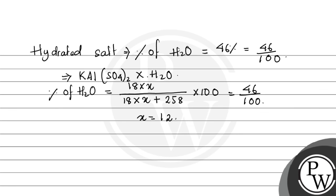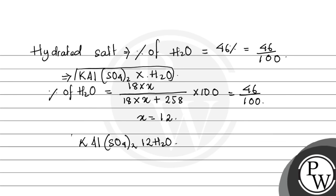We put X = 12 into the formula, giving us KAl(SO₄)₂ · 12H₂O. This is the simplest formula for the crystalline salt. I hope you have understood it. Best of luck.